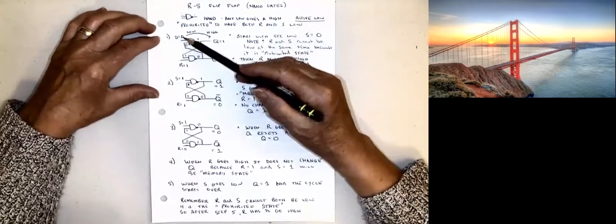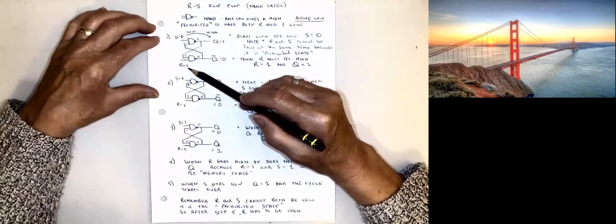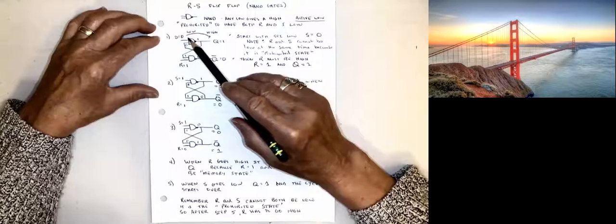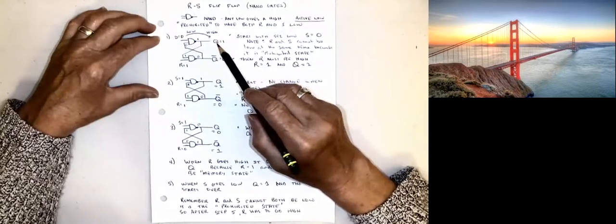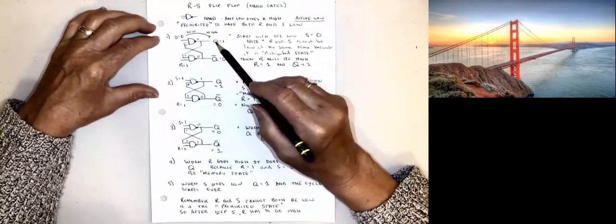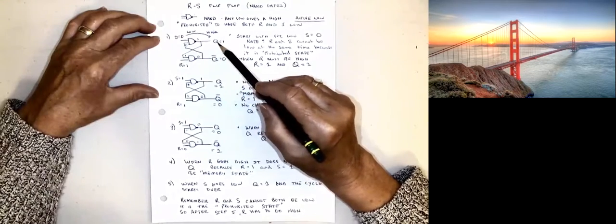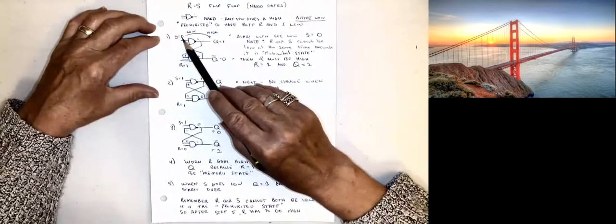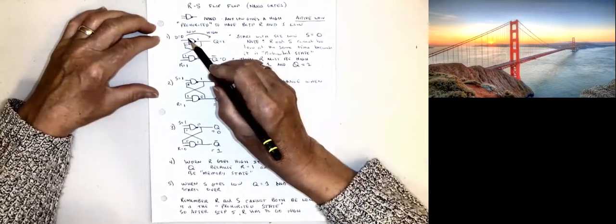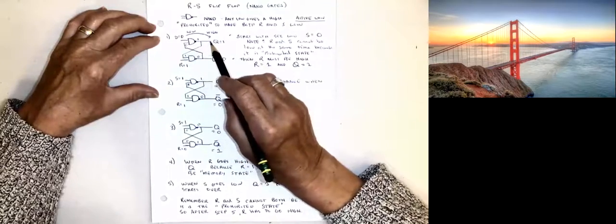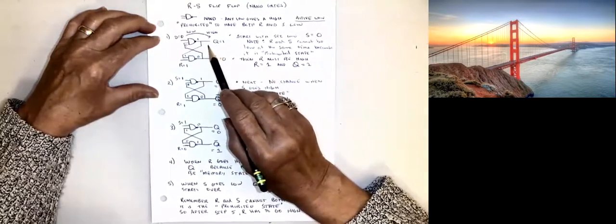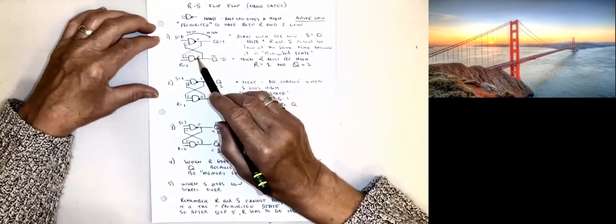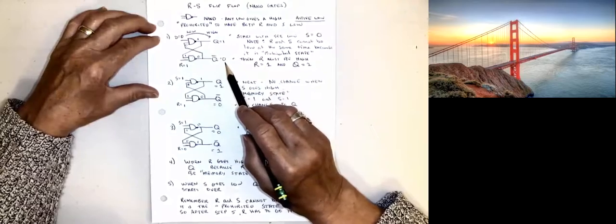So I can start S with a low, and that means R would have to not be low or it would be a prohibited state, so we're going to put R as a high. Any low gives us a high. Notice that in this case Q is on the top of this gate, whereas with the NOR gates Q was down here and Q bar was up here — that's a difference. So when S is low, we end up with a low inside here, any low gives us a high, Q goes high — it's in the set position. That high comes down here, we have two highs, high inside, but low out, and NOT Q is low.